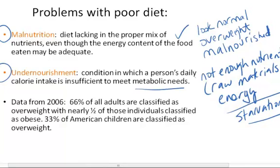Malnutrition is an issue in the U.S. — there are not a lot of people literally starving to death here like in other parts of the world, but malnutrition is a big problem. Data from 2006 states that 66% of all adults are classified as overweight, with nearly half of that 66% classified as obese, and 33% of American children are classified as overweight. The issue in the U.S. is sort of the opposite of many other parts of the world — it's health issues associated with too much food, not necessarily the right types of food, but too much energy. The body can't use all the energy, so the raw materials that carry the energy are converted to fat to be stored for later. These people can be malnourished and overweight at the same time.